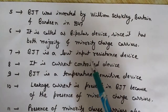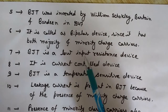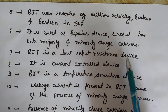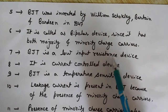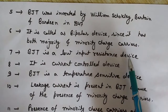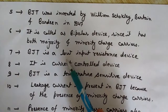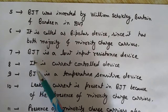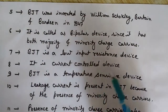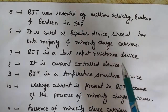BJT is a low input resistance device — the input resistance offered by the BJT is low, while the output resistance is high. This combination of low input resistance and high output resistance helps in the amplification process, allowing BJT to work as an amplifier.